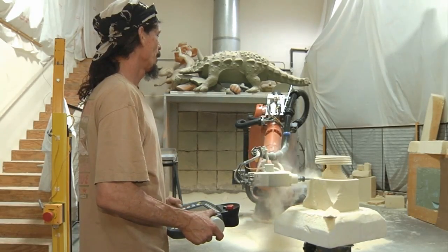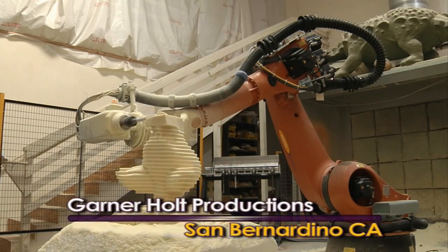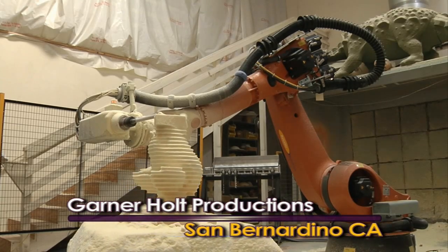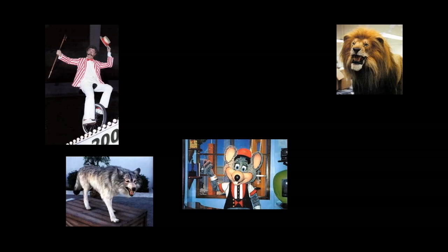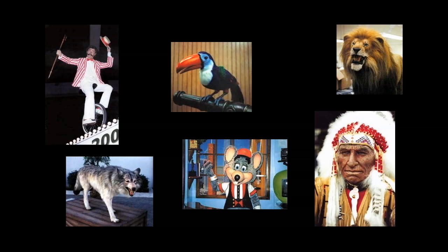Robert's new partner Wanda is this seven axis milling robot at Garner Holt Productions in San Bernardino, California. They're the world's largest maker of animatronics for theme parks, stores, museums and shows.